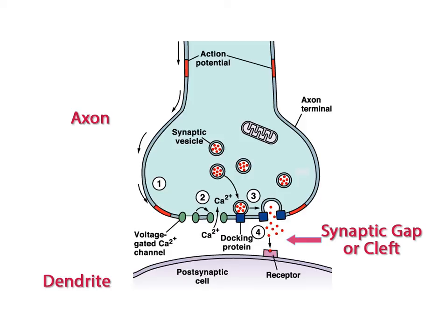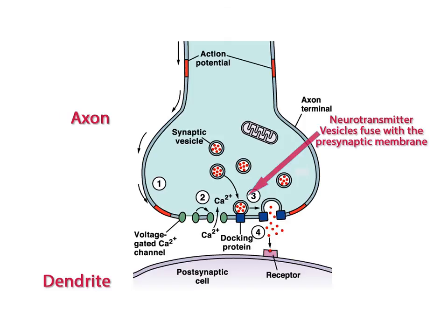The calcium ions stimulate contractile proteins to pull the neurotransmitter vesicles to the presynaptic membrane. The neurotransmitter vesicles fuse with the presynaptic membrane and the neurotransmitter is released from the vesicle into the synaptic gap by a process called exocytosis.